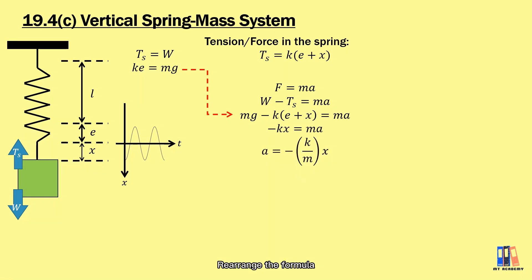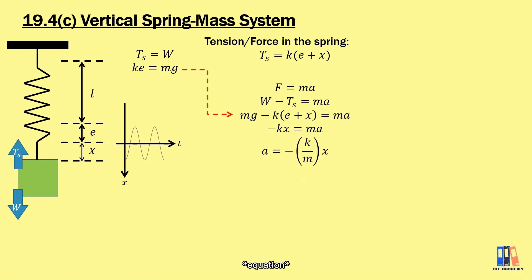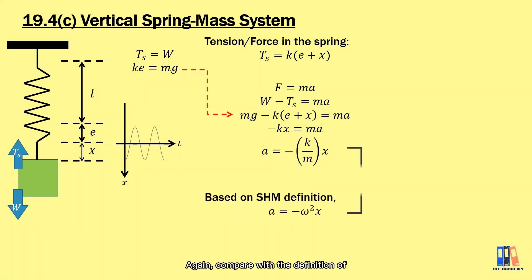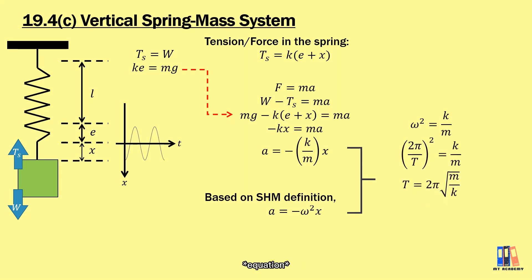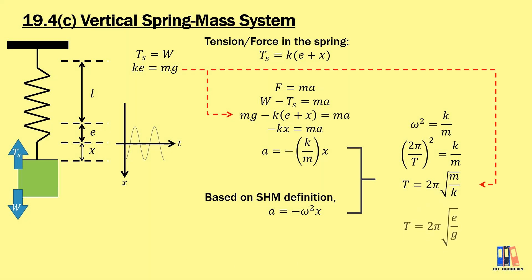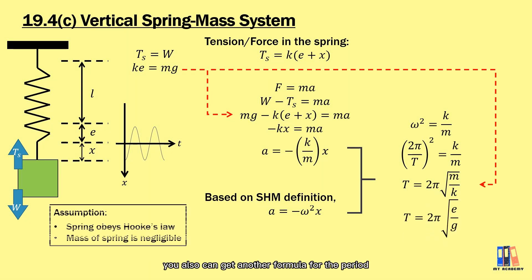Rearranging gives acceleration = −(k/m)·x, which matches the SHM definition to give ω² = k/m. Substituting the angular frequency formula gives the period T = 2π√(m/k). In this vertical system, you can also express the period as T = 2π√(e/g) by replacing m/k with e/g.